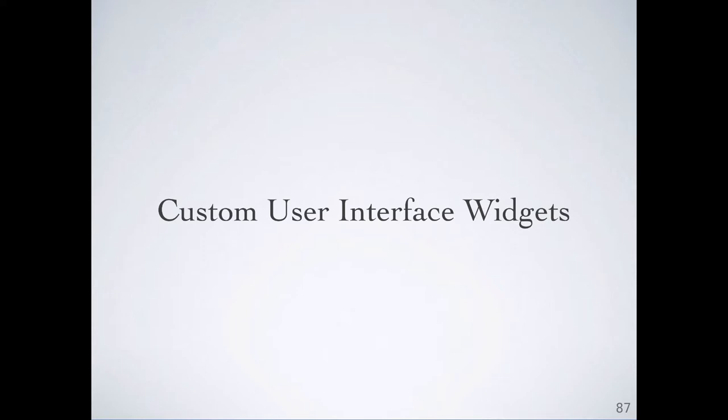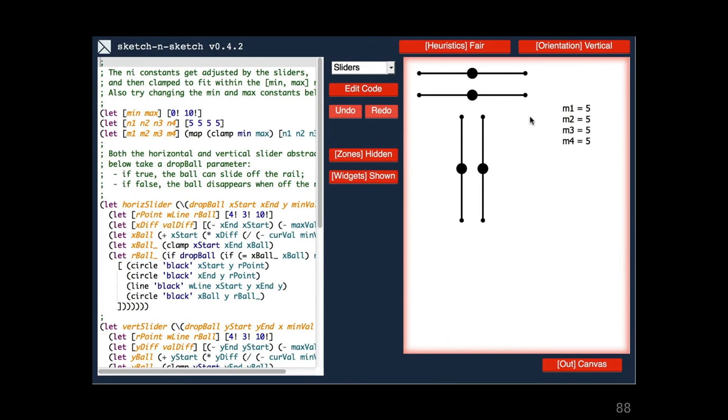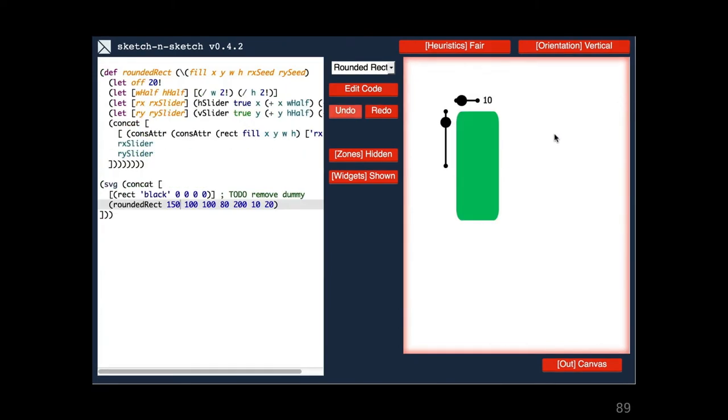So far we've showed several examples where live synchronization allows us to easily modify design parameters. Now we'll discuss how live synchronization enables library writers and users to design custom user interface widgets. We already demonstrated the sliders built into Sketch and Sketch, but if we're not happy with their appearance, we can easily make our own by setting up a shape to uniquely control a single constant in the program.